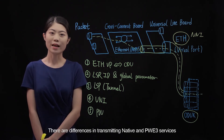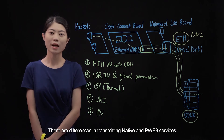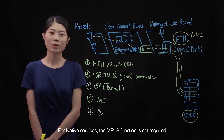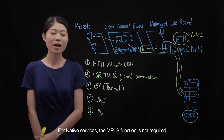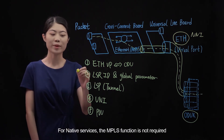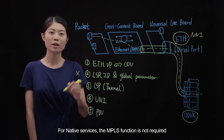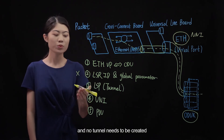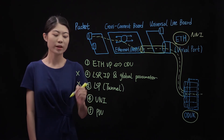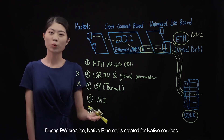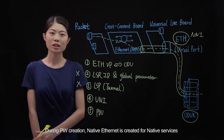There are differences in transmitting native and PWE3 services. For native services, the MPLS function is not required and no tunnel needs to be created. During PW creation, native Ethernet is created for native services.